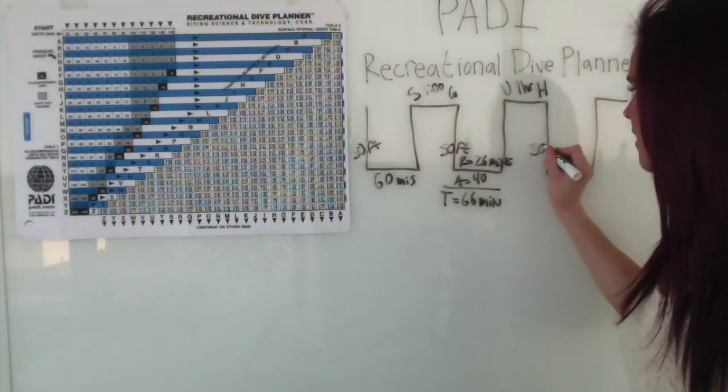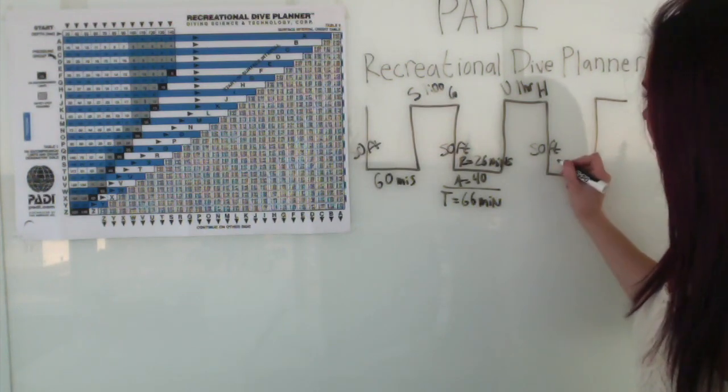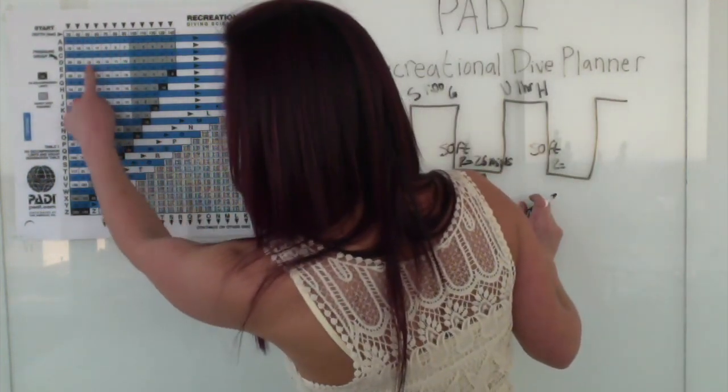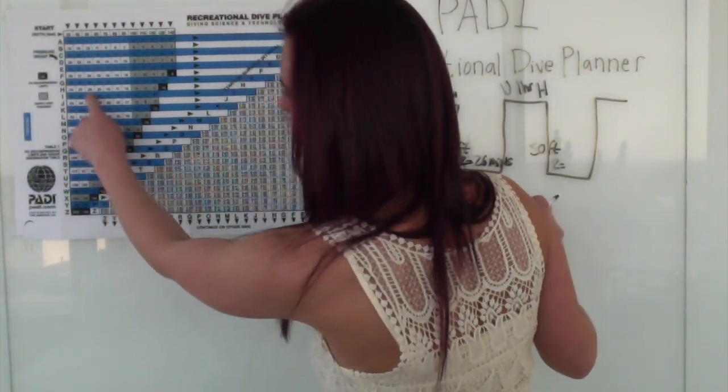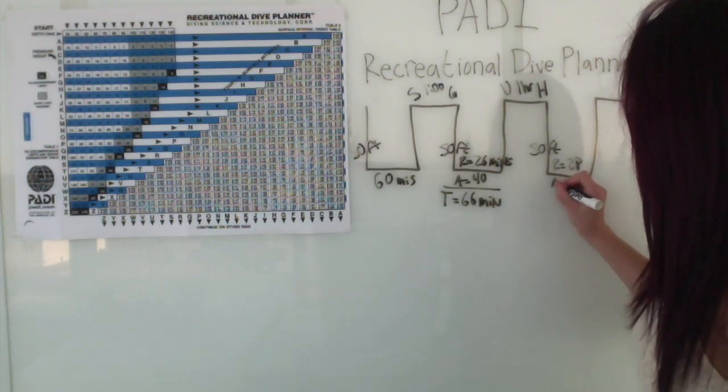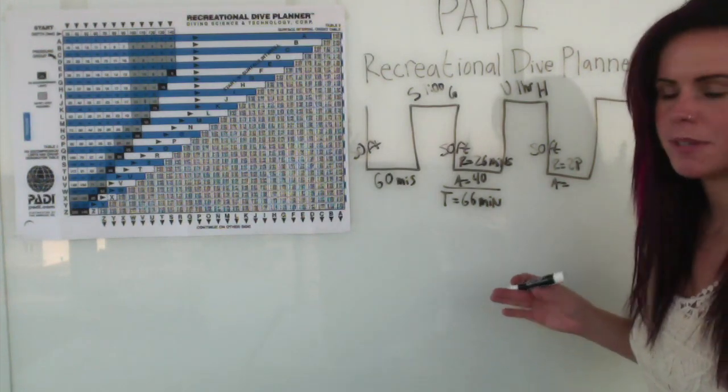So we're going to dive down to 50 feet for the third time. We have to look at our residual nitrogen first. 50 feet at pressure group H puts us at a residual nitrogen of 28. Let's say the actual time we want to spend down is 30 minutes.